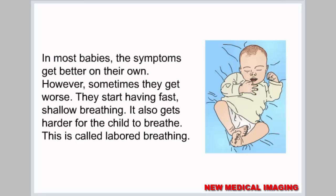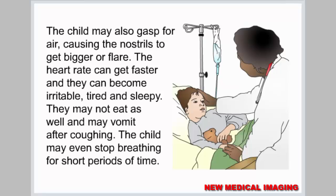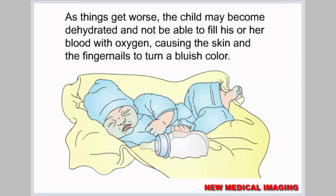In most babies the symptoms get better on their own. However, sometimes they get worse — they start having fast, shallow breathing, and it also gets harder for the child to breathe, which is called labored breathing. The child may also gasp for air, causing the nostrils to flare. The heart rate can get faster and they can become irritable, tired, and sleepy. They may not eat as well and may vomit after coughing. The child may even stop breathing for short periods of time. As things get worse, the child may become dehydrated and unable to fill the blood with oxygen, causing the skin and fingernails to turn a bluish color.